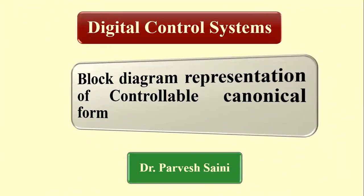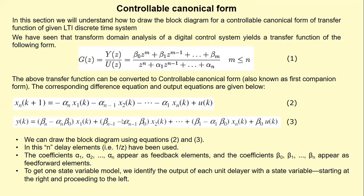In this lecture we will understand how to draw the block diagram of a controllable canonical form. In our previous lecture we covered how we can convert a transfer function of a linear time-invariant discrete-time system to the state space representation through controllable canonical form. In this lecture we will see the direct realization structure of such a system converted to state space representation through controllable canonical form.